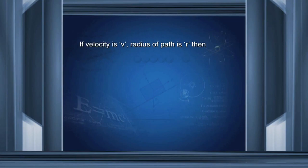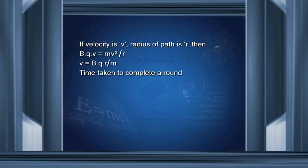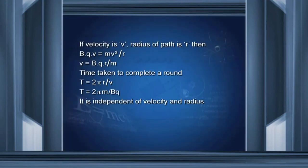If velocity is V and radius of the path is R, then it requires the centripetal force MV squared upon R, which is balanced by the magnetic force. That means BQV equals MV squared upon R, so velocity V equals BQR upon M. The time taken to complete one round T equals the circumference 2πR divided by the velocity. Substituting the value of velocity, we get T equals 2πM divided by B into Q. From this expression, it is clear that the time period is independent of both the velocity of the charge and the radius of the path.